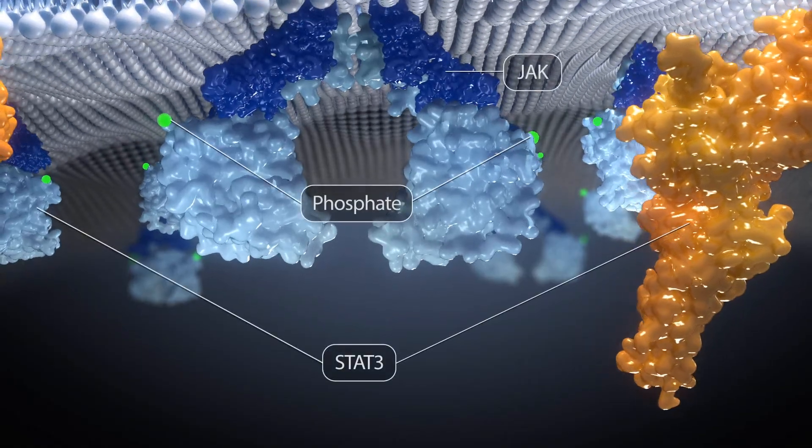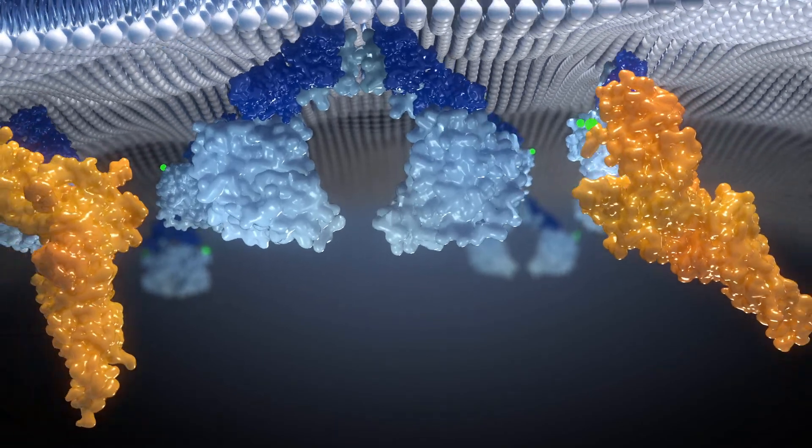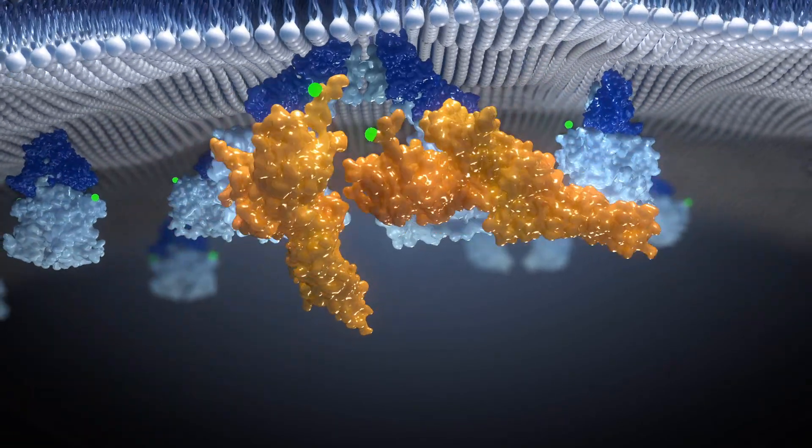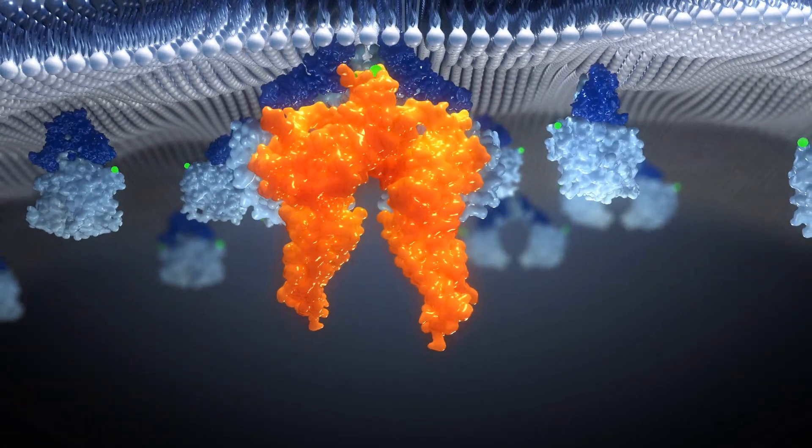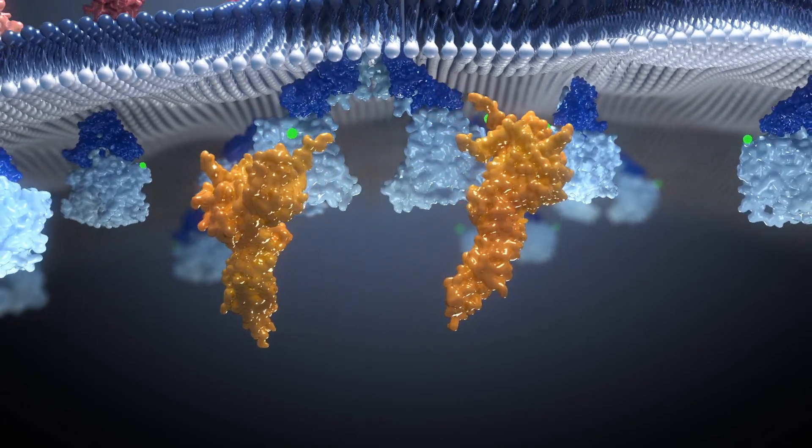In normal cells, STAT-3 is activated in a strictly regulated and transient process, initiating its own repression via negative feedback loops. In cancer stem cells, however, this process is dysregulated.